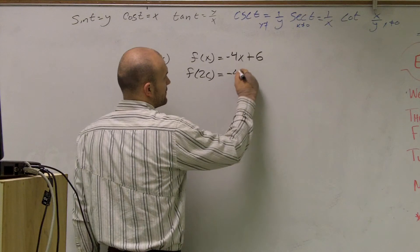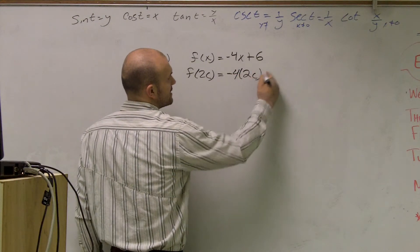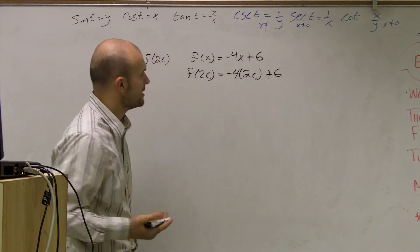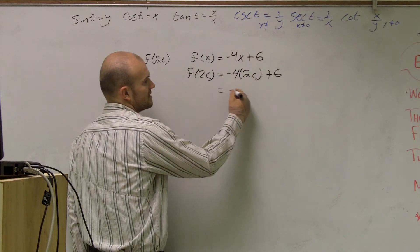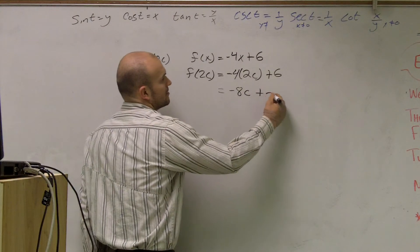So therefore, I just do negative 4 times 2c plus 6. Then, here I can multiply this through. So I get negative 4 times 2c is negative 8c plus 6.